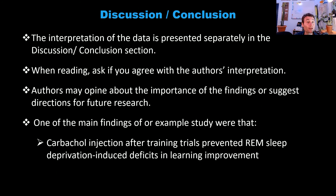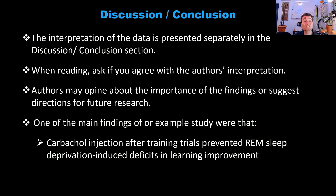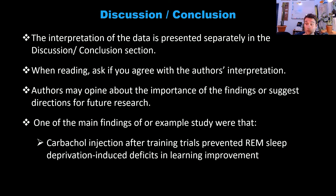When you finish the results section, you move on to the discussion and conclusion, which caps off every scientific paper. This is where the authors talk about their interpretation of the data — there's no interpretation in the results section, just numbers and data. The discussion is where they opine on the importance of their findings, suggest directions for future research, explain how findings fit into other areas of research, and may discuss limitations of their own study.